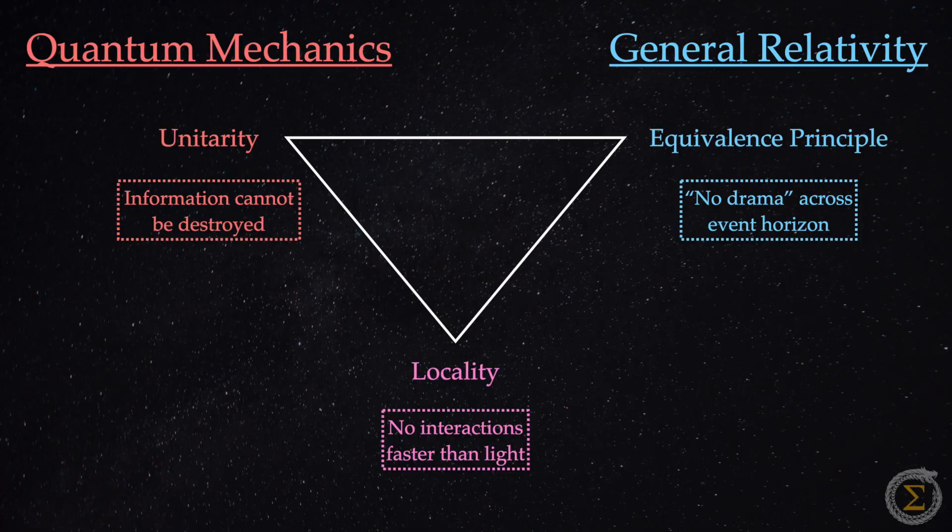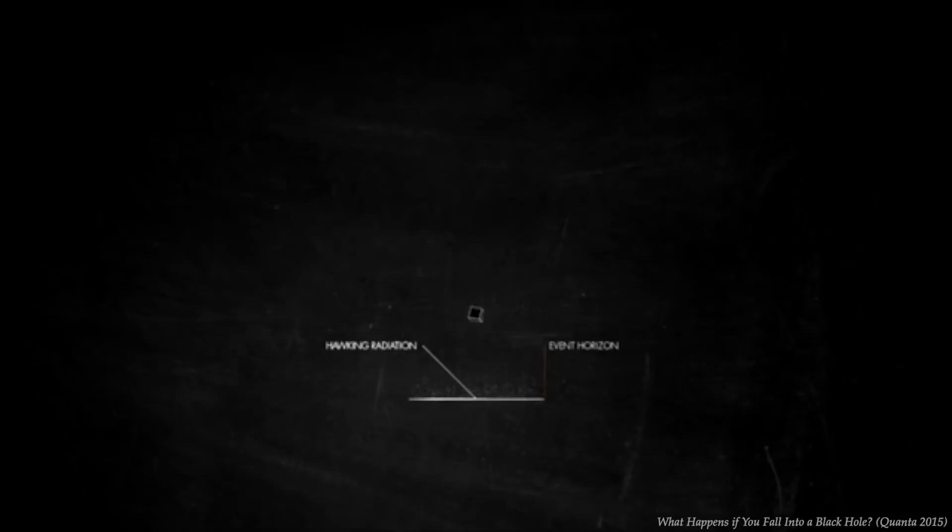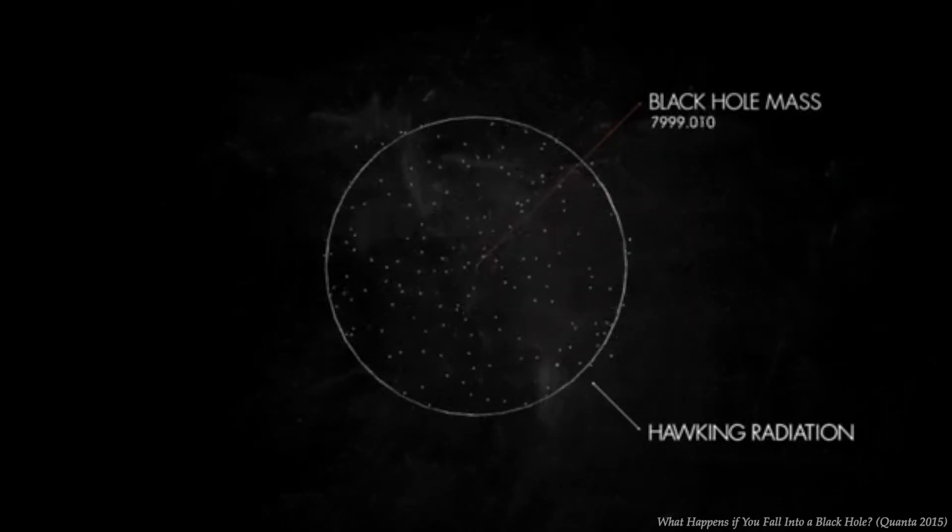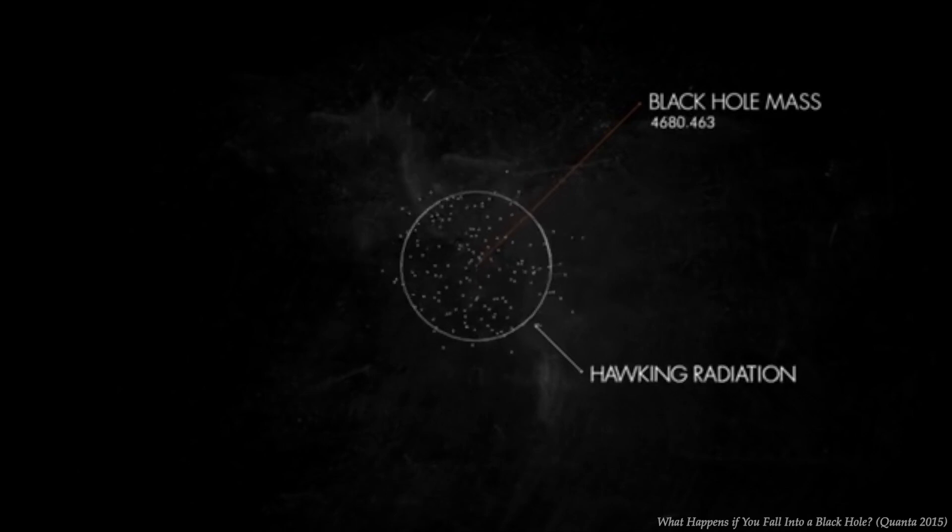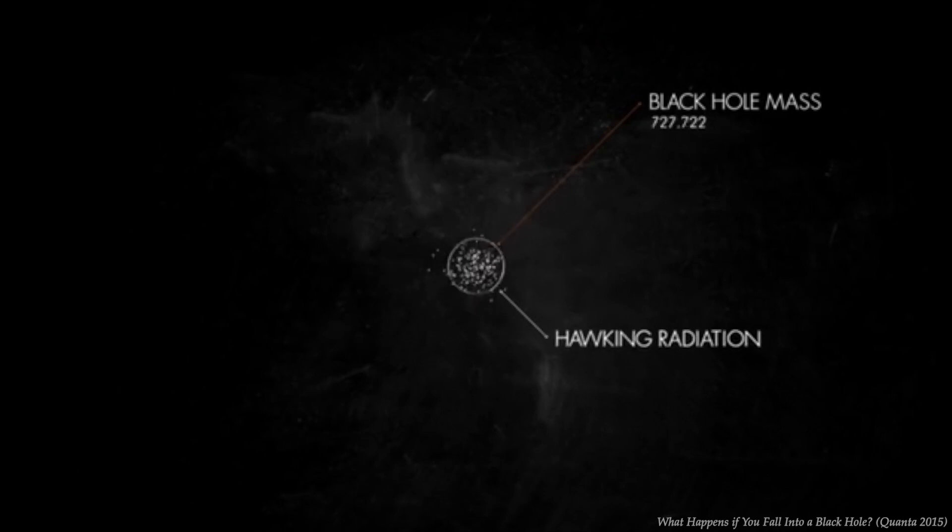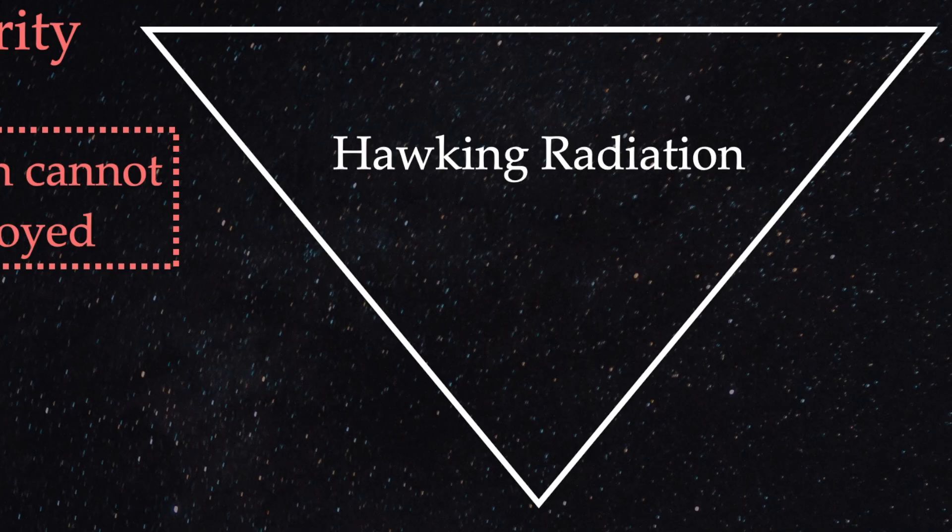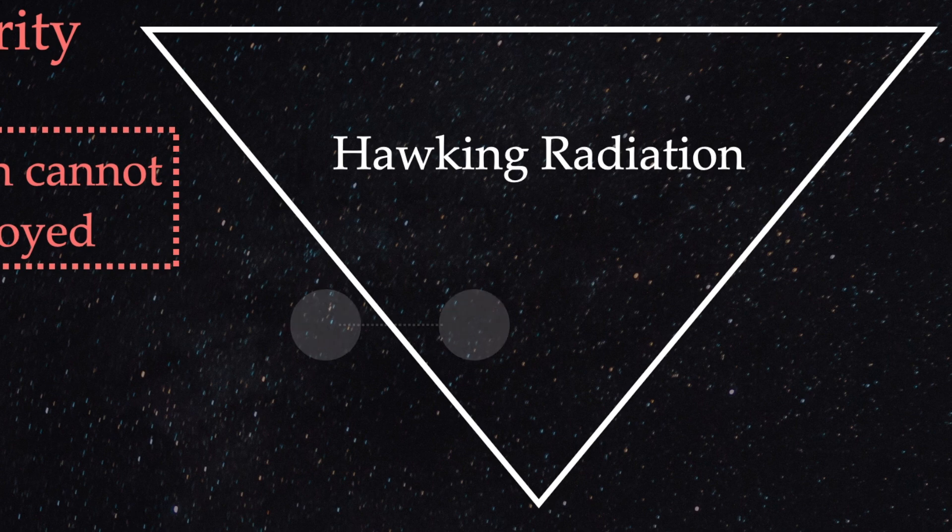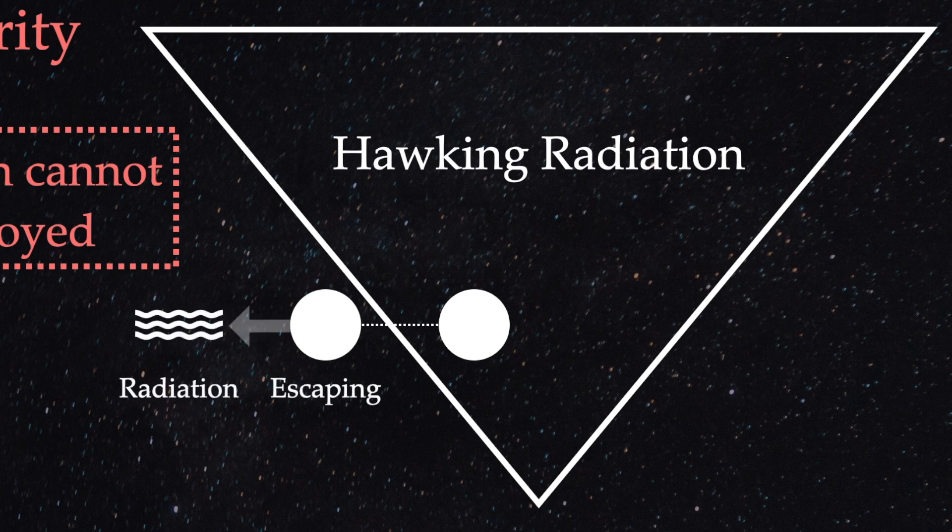So why are GR and QM in conflict? Hawking radiation. In 1974, Stephen Hawking discovered that black holes slowly evaporate over time by emitting particles. This process occurs when virtual particle pairs pop into existence near the event horizon. One particle escapes, becoming radiation, while its partner falls into the black hole.